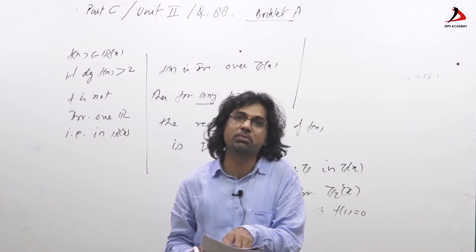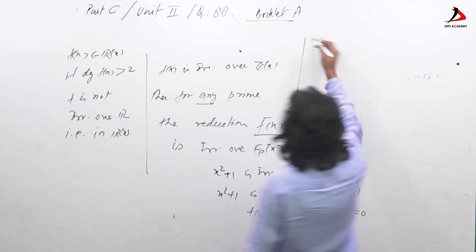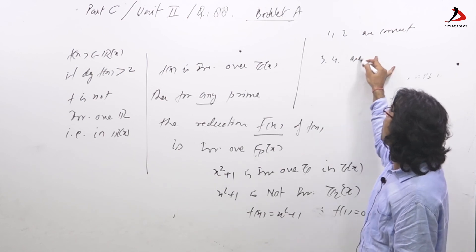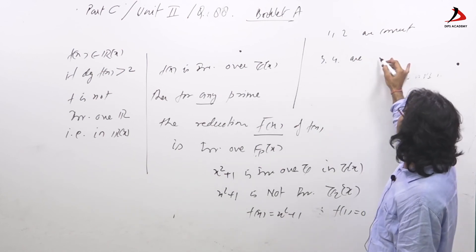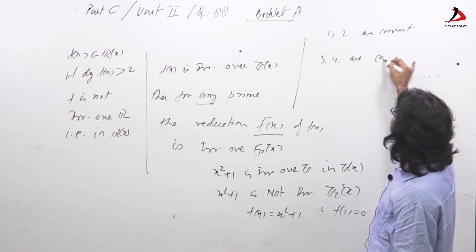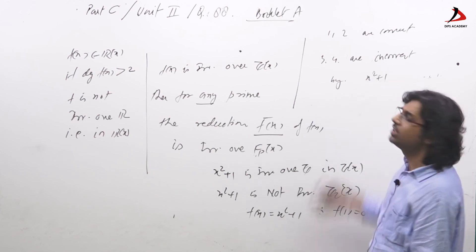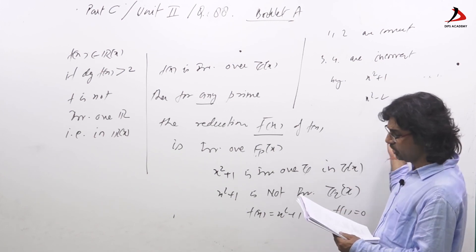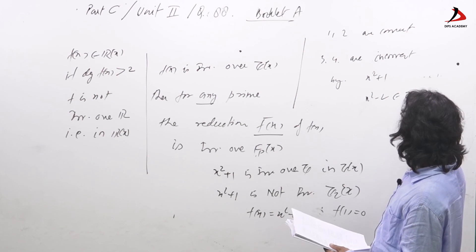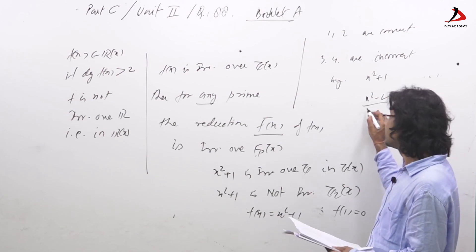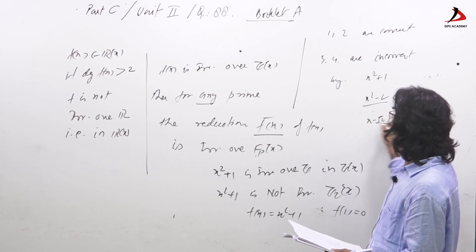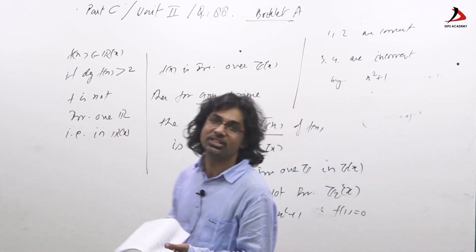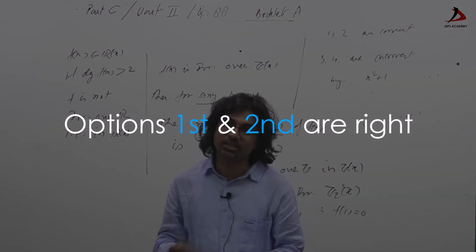So for question number 88, options 1 and 2 are correct whereas 3 and 4 are incorrect. Option 3 is disproved by the example x² + 1, and option 4 is disproved because x² − 2 is irreducible over Z but reducible over R as (x − √2)(x + √2). So a polynomial which is irreducible over Z implies — and is implied by — irreducible over Q, but options 3 and 4 are incorrect. Thank you.